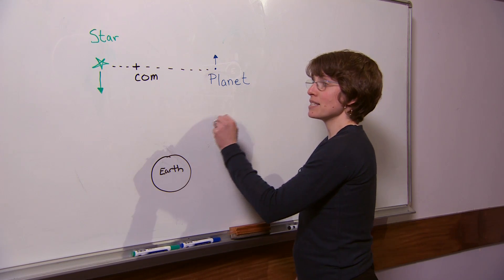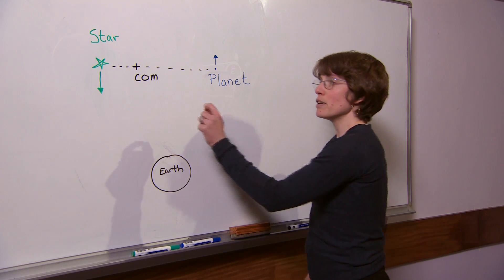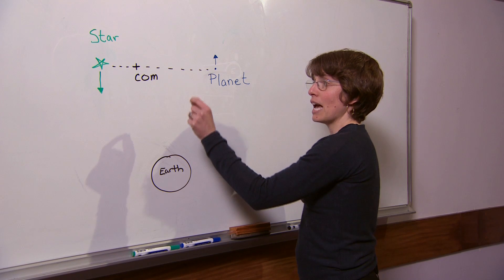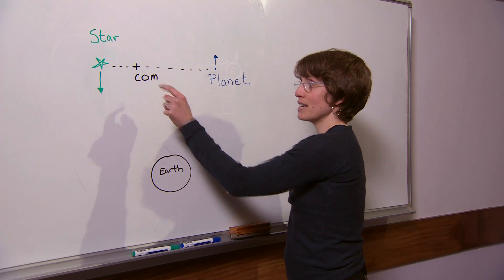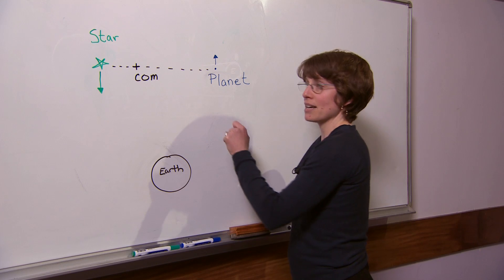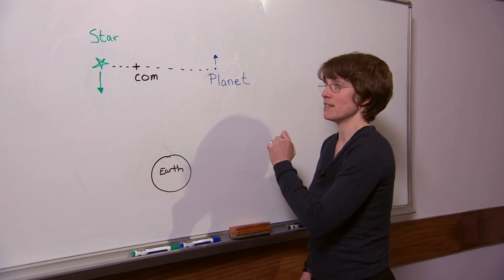Now this center of mass is located at a balance point. So if you imagine having a massless rod connecting the star to the planet, the center of mass would be at the balance point in this rod.